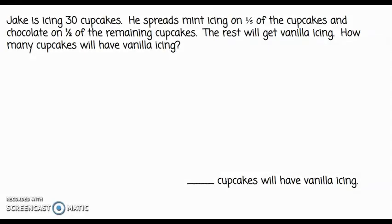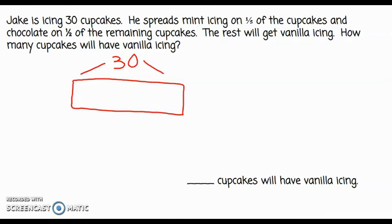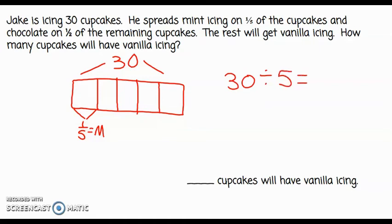Let's take a look at a different type of problem. Jake is icing 30 cupcakes. He spreads mint icing on one fifth of the cupcakes and chocolate on half of the remaining cupcakes. The rest will get vanilla icing. How many cupcakes will have vanilla icing? Now that we've read the problem once for understanding, let's reread and try to represent it visually. I know that Jake is icing 30 cupcakes, so I'm going to represent that using my tape diagram. I also know that he spreads mint icing on one fifth of the cupcakes, so I'm going to split the tape diagram into five equal parts. I know that one fifth would be equal to the mint icing cupcakes. To figure out how many cupcakes that would be, I take 30 divided by five, which gives six cupcakes per group — so there would be six cupcakes with mint icing.